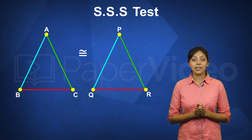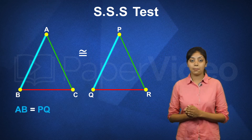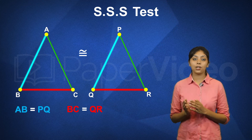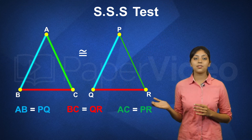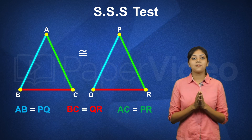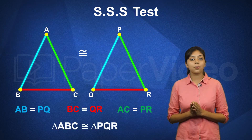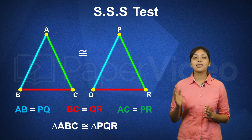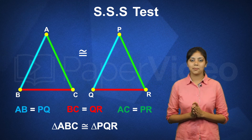This means that if side AB is equal to side PQ, side BC is equal to side QR, and side AC is equal to side PR, then we can say that triangle ABC is congruent to triangle PQR. This is known as the side side side test of congruency.